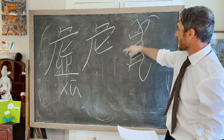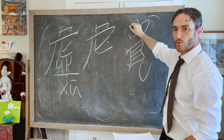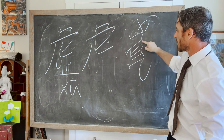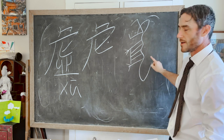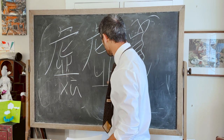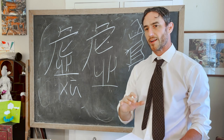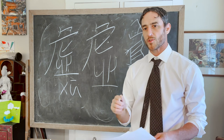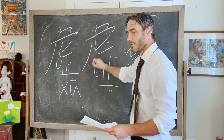In the Oracle Bone script, it was written something like this — you can see a head with a large mouth, an eye, the curved back and feet, and some lines depicting the tiger's pelt. This portion down here in its earliest forms may have represented a hill or position, or it may have indicated a general's or high-ranking official's headdress.